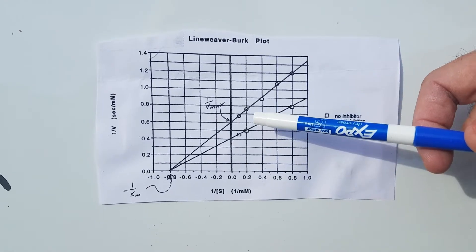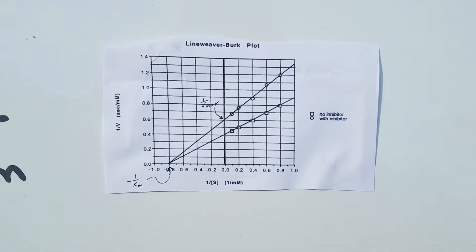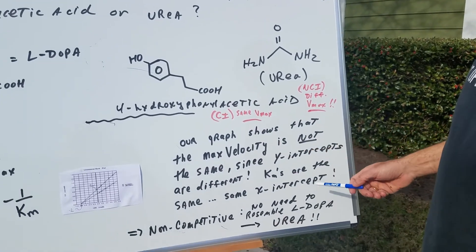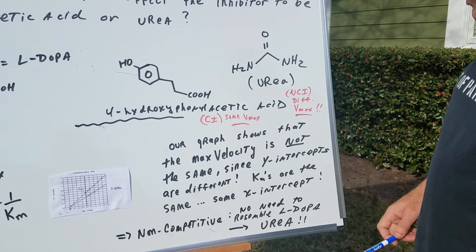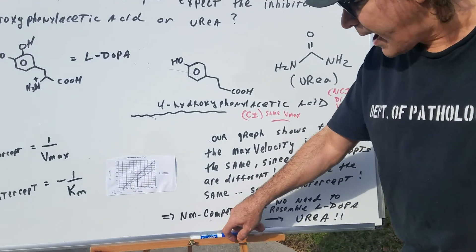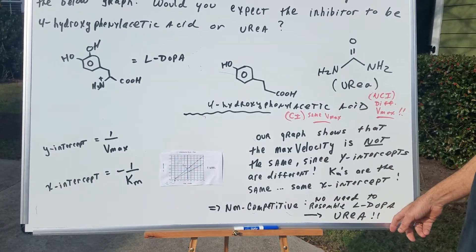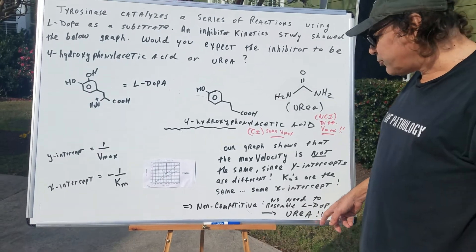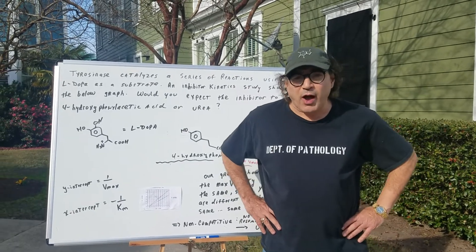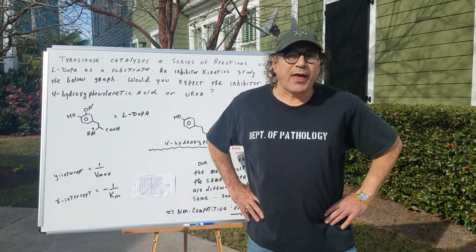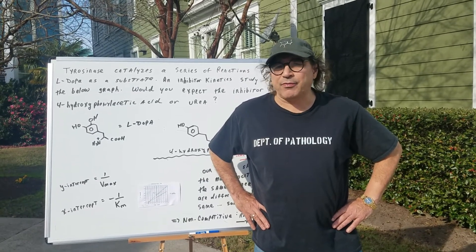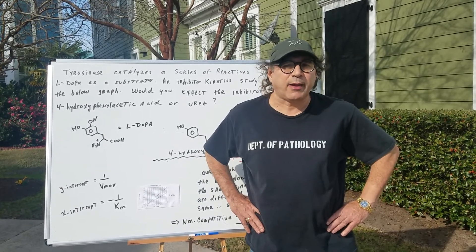All we care about is looking at the y-intercepts. Since the y-intercepts are different, our graph shows that the maximum velocity is not the same. The Km's are the same, though, because they have the same x-intercept. So, because the VMAXs are different, by the looks of the graph, we can conclude it's a non-competitive inhibitor situation. Therefore, there's no need to resemble L-DOPA, and we would most likely assume that urea is going to be the correct response here. Urea would be the inhibitor — this would be an example of a non-competitive inhibitor.